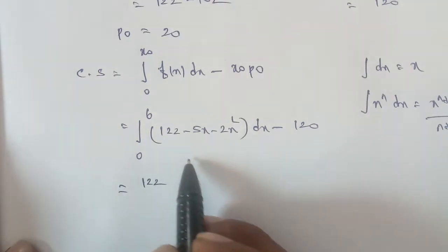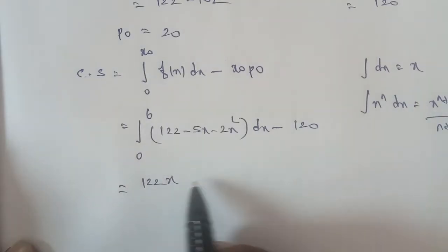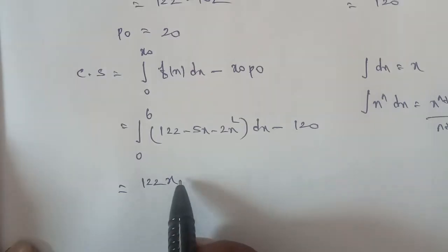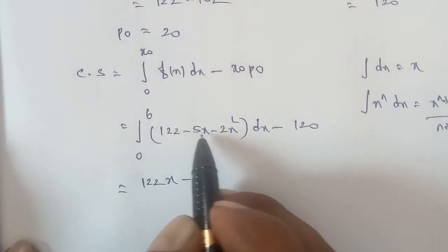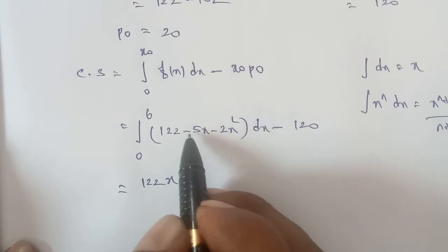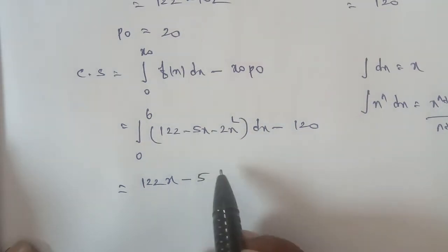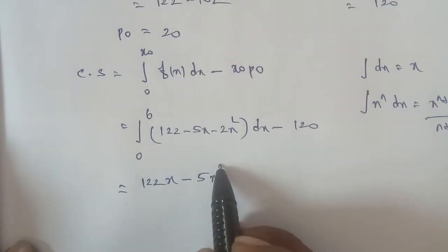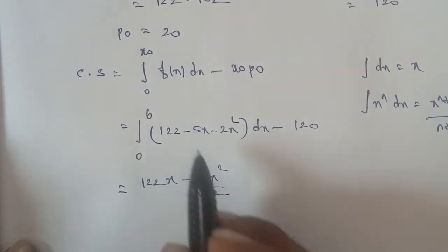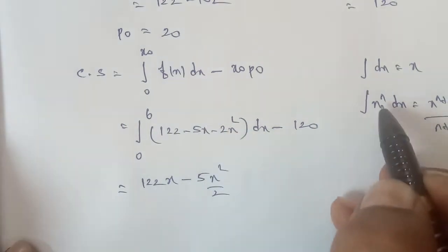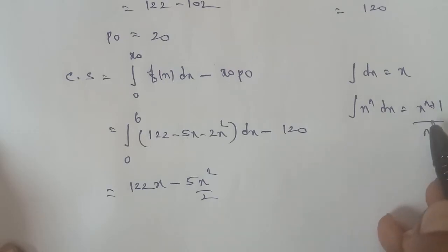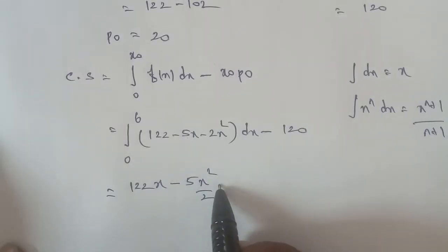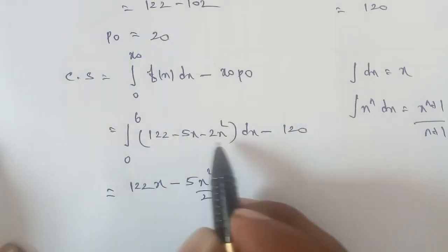Next, for the term minus 5x dx: 5 is a constant, so it comes out. Applying the formula with n equal to 1, we get x to the power (1+1) divided by (1+1), which is x squared divided by 2. So the integral of minus 5x dx gives minus 5 times x squared by 2.